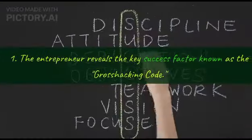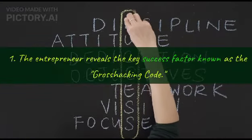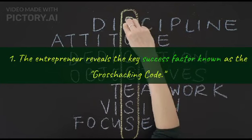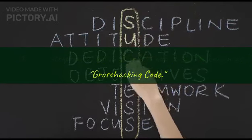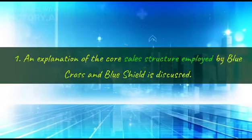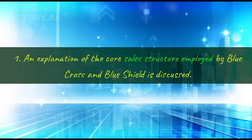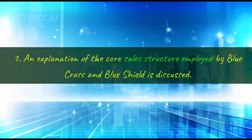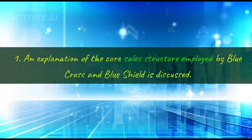The entrepreneur reveals the key success factor known as the Crosshacking Code. An explanation of the core sales structure employed by Blue Cross and Blue Shield is discussed.